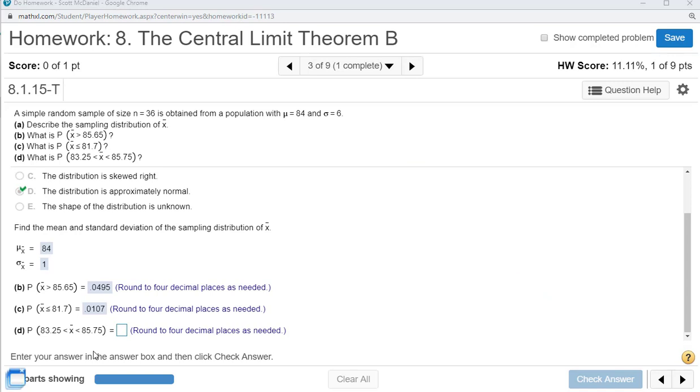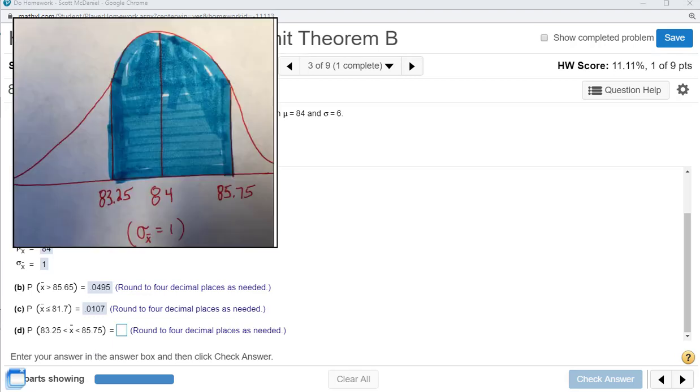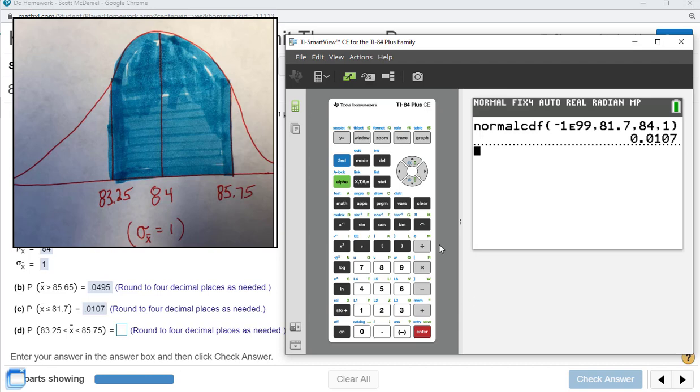In part D, we're going to find where the sample mean is between 83.25 and 85.75. Again, draw these out. Doesn't take long at all to do. And on the calculator, I'm going to pull this up.